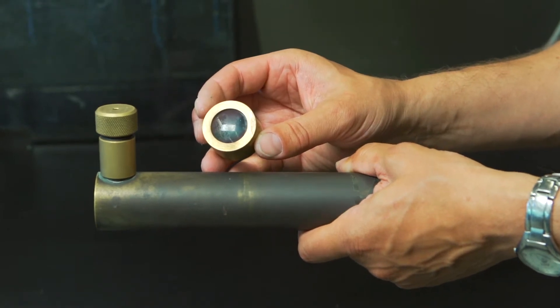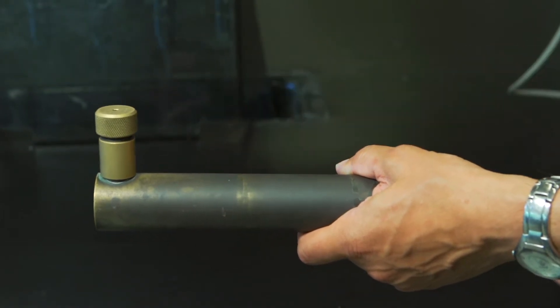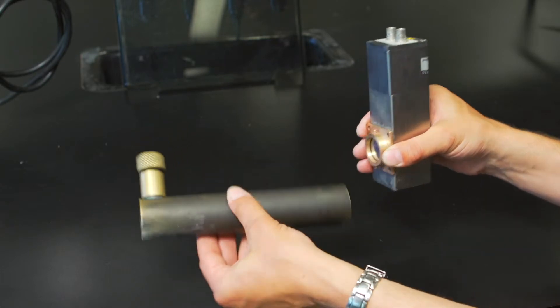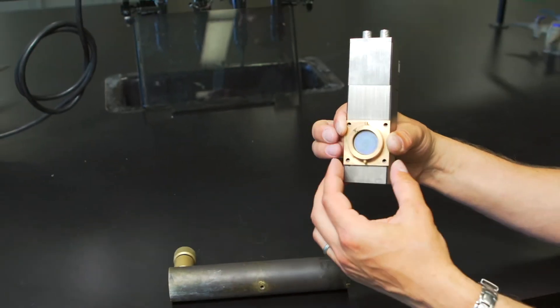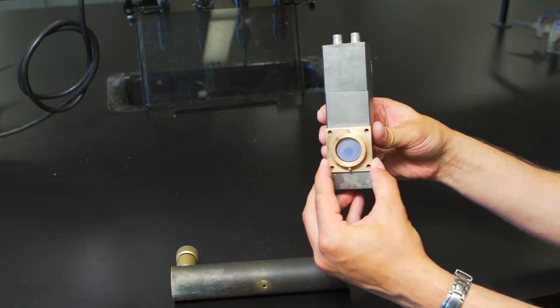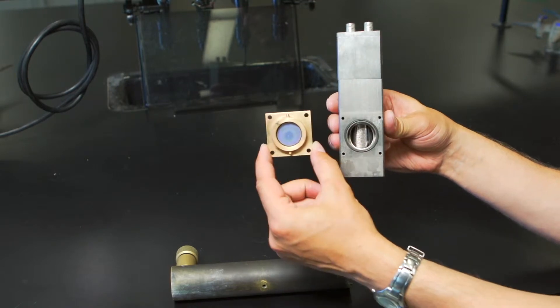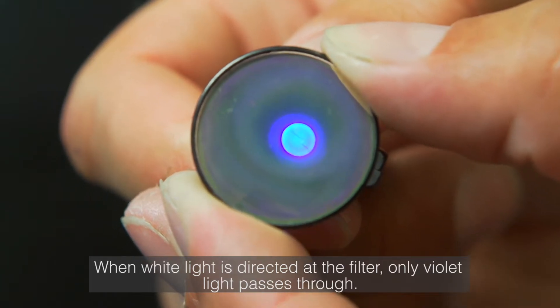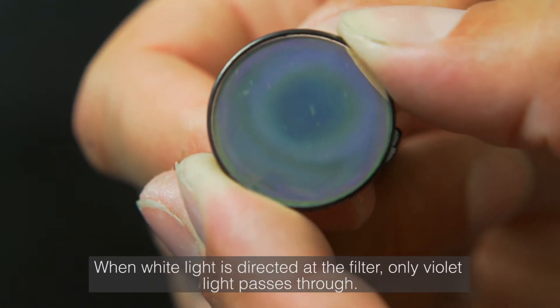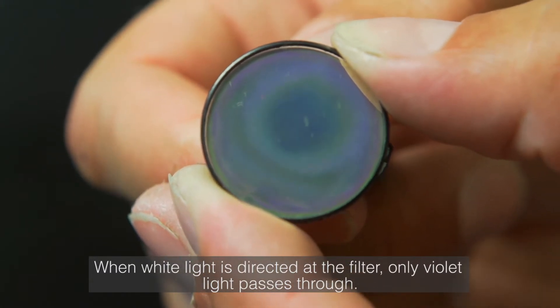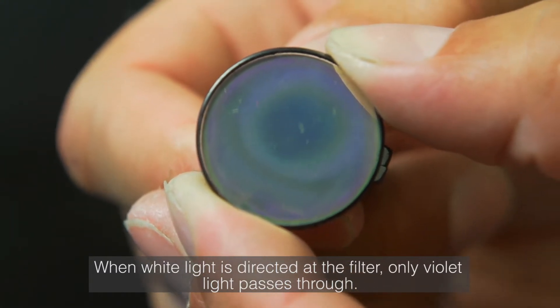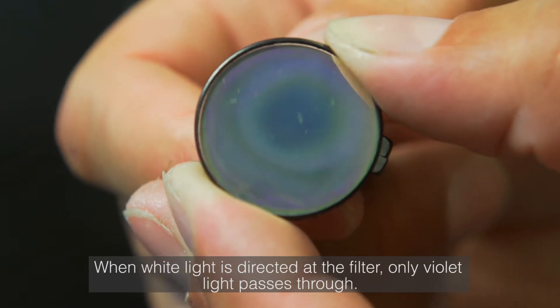The photons continue through the tube until they reach an optical filter. The bandpass filter has a maximum transmission at 460 nanometers, the wavelength of the emitted photons for the chemiluminescence reaction. The optical filter looks like a mirror because it reflects most wavelengths. It transmits only in the range of 450 to 470 nanometers, reflecting everything else.